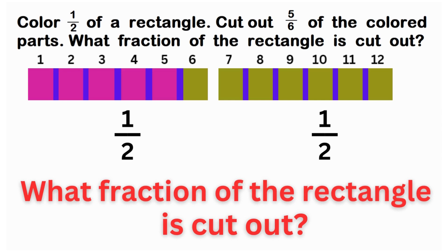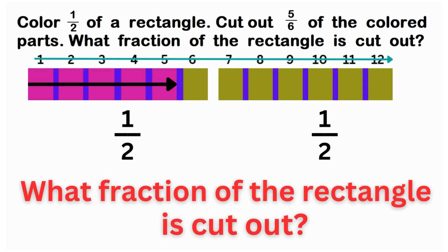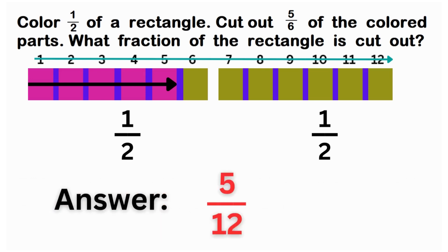What fraction of the rectangle is cut out? Based sa illustration, let's count: one, two, three, four, five. Five over twelve. Kasi evenly divided — equally divided — there are twelve bars. Since five lang man ang colored or cut out over the whole or total number of bars or units, our answer is five over twelve.